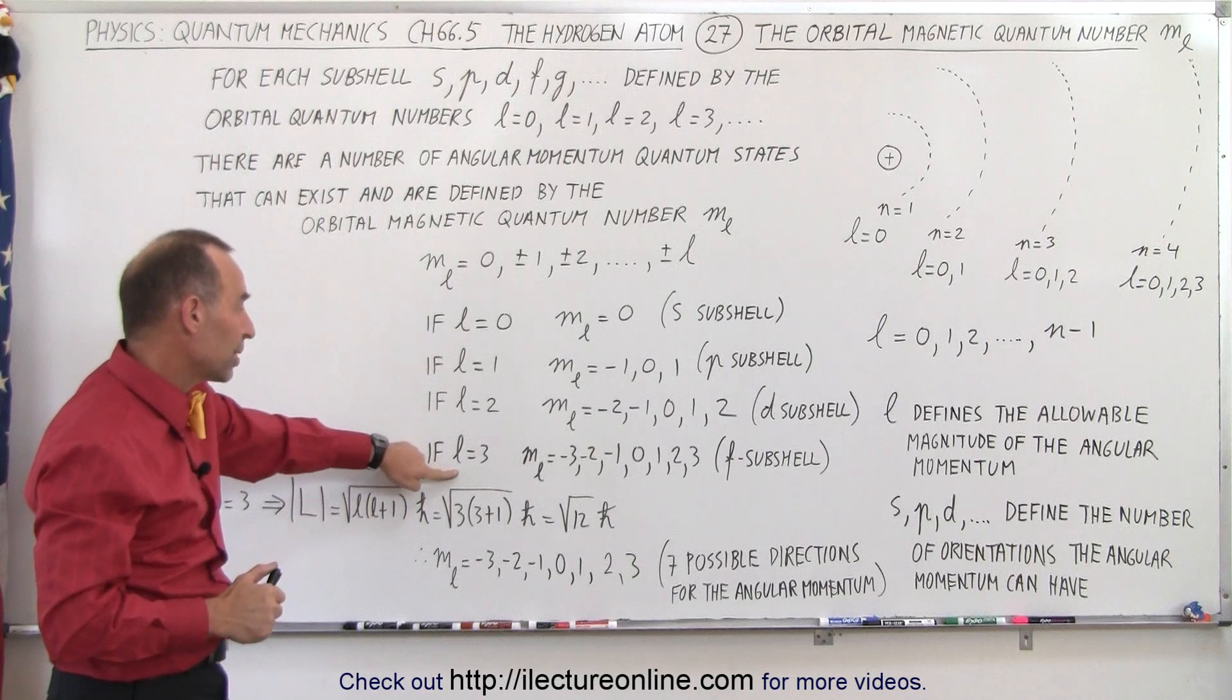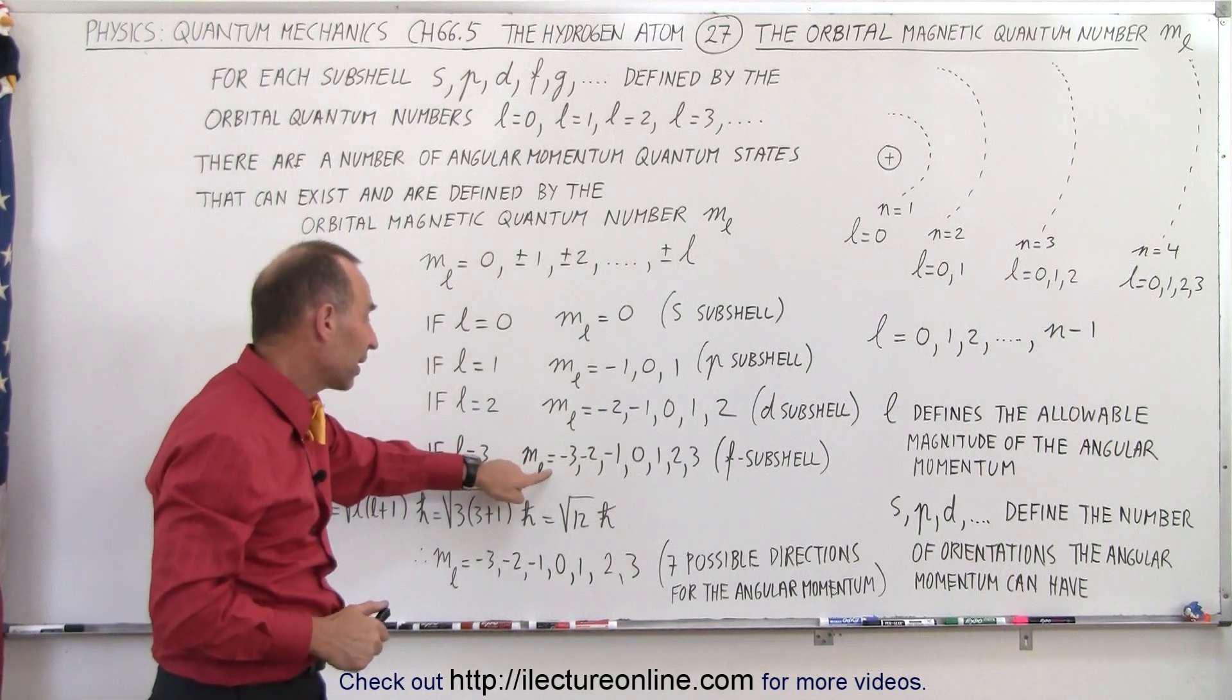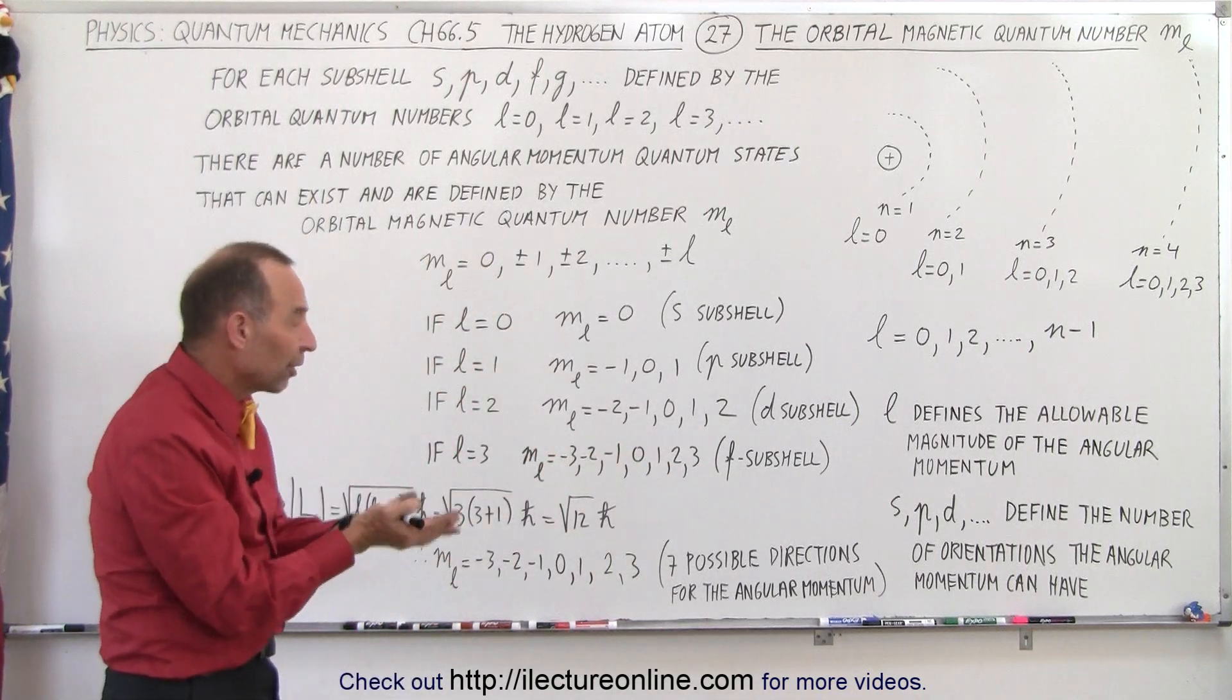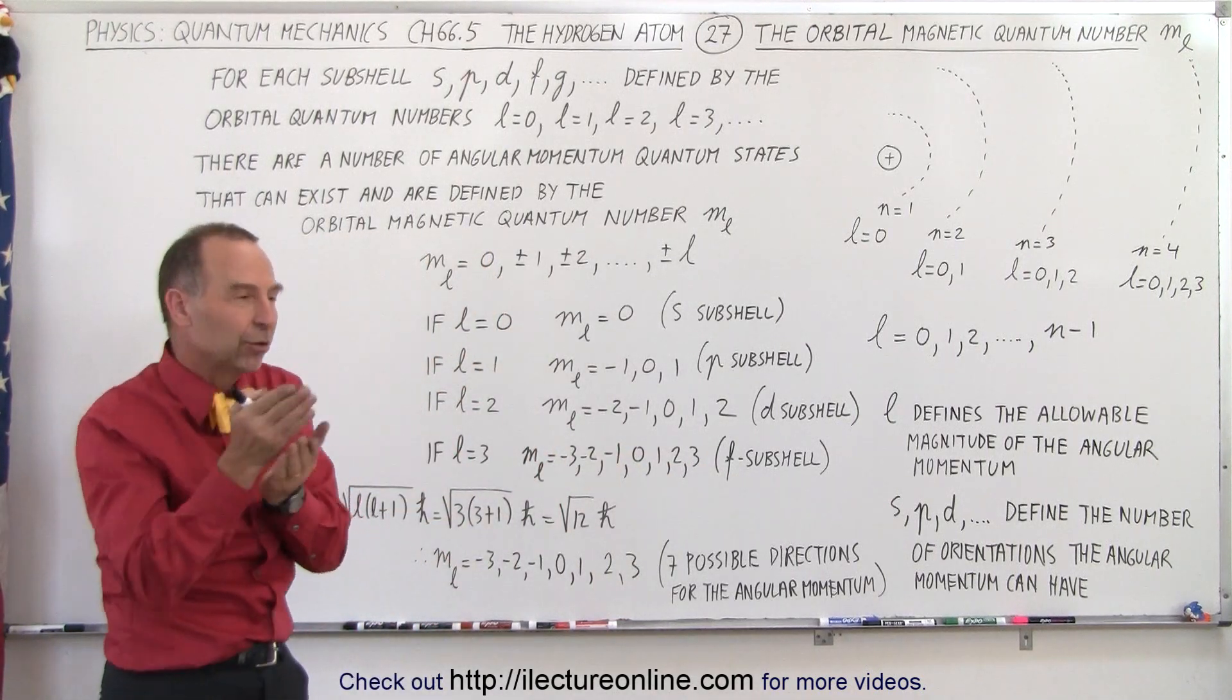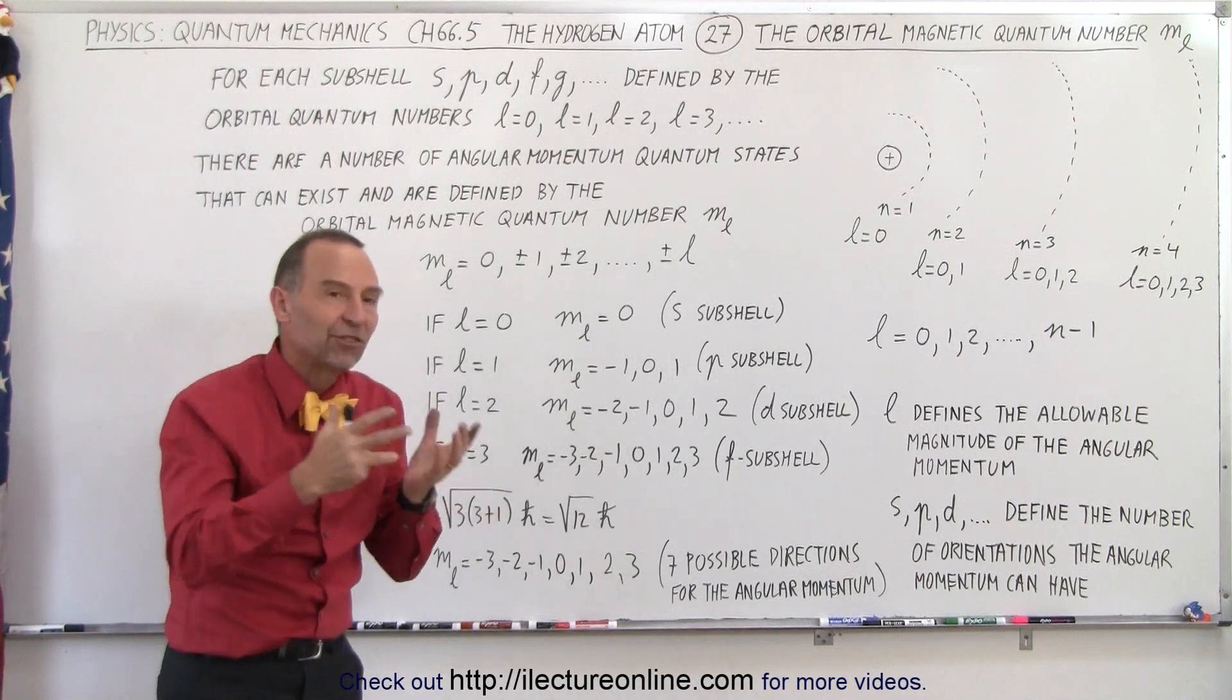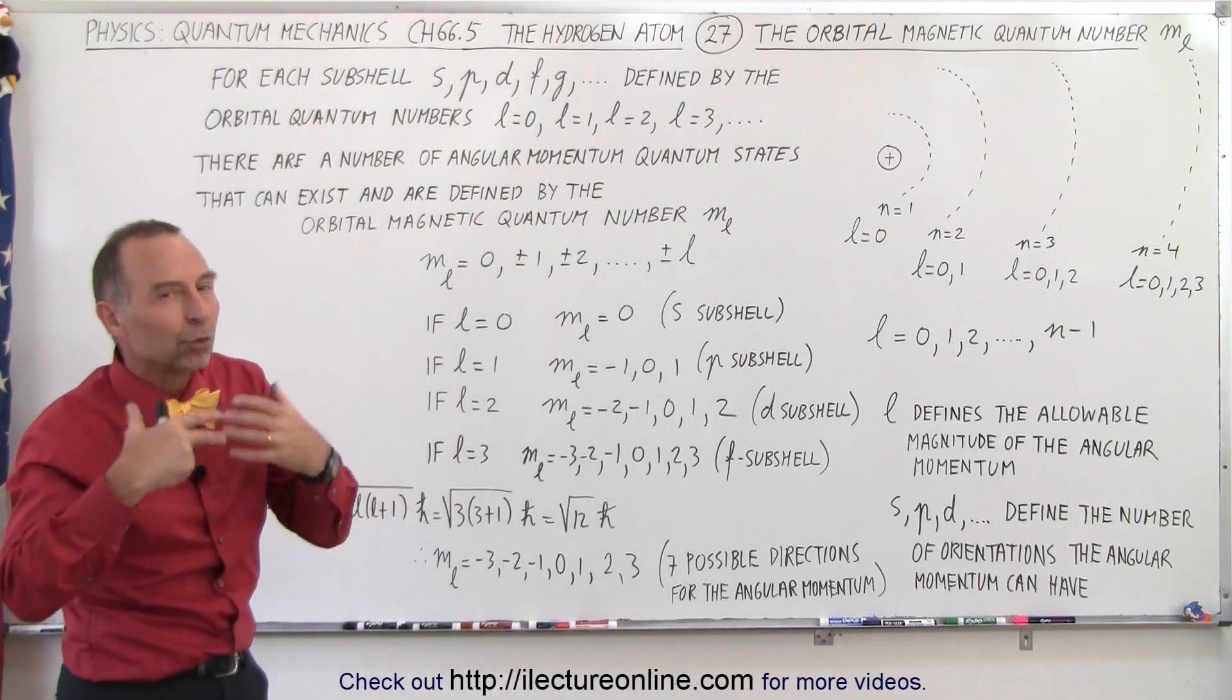And if L equals 3, that means that M sub L can have seven values, and therefore that makes up the F subshell, and therefore there are seven different angular momentum directions, making the possibility of seven orbitals. And again, we'll talk about that.